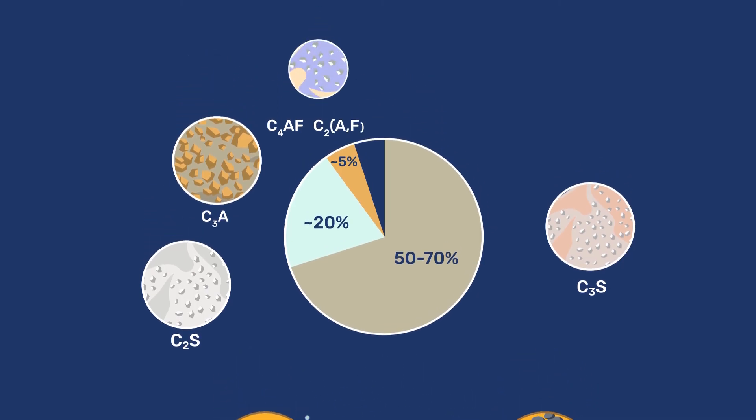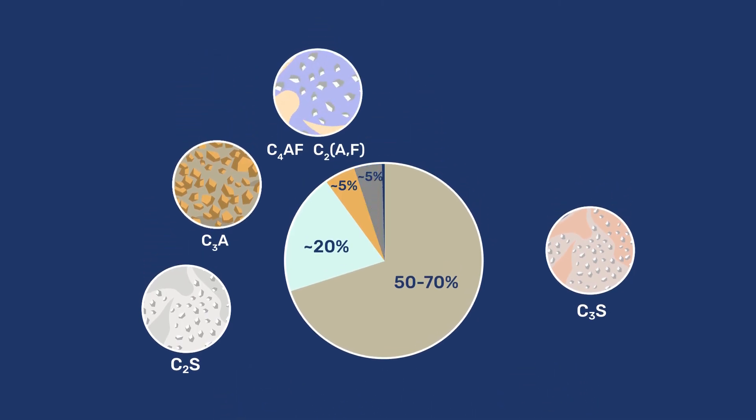C4AF, or better C2(A,F), is present in similarly low amounts as C3A. Within the first day, it reacts similarly to C3A, but then becomes much slower. This is why it is not given much consideration here, apart from the fact that it gives the grey colour of Portland cement.